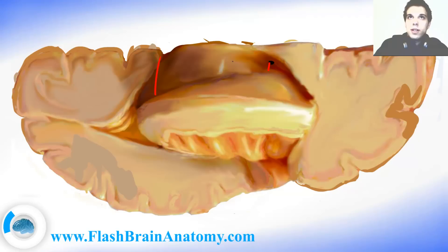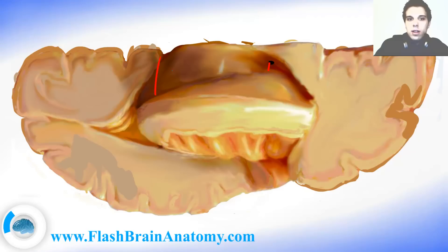I will just mark the cellamedia, and this over here was the anterior horn. This over here is the thalamus. On the thalamus there is a layer called the lamina affixa. The lamina affixa creates the floor of the cellamedia. It is a small ependymal layer on the thalamus, and the thalamus is right beneath it.